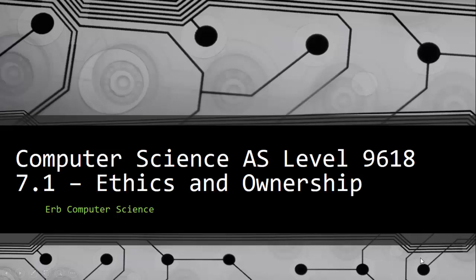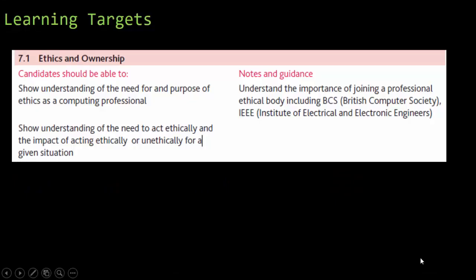Continuing with AS Level Computer Science 9618, getting into topic 7.1, Ethics and Ownership. Let's take a look at the learning targets. Candidates should be able to show an understanding of the need for and purpose of ethics as a computing professional, the importance of joining a professional ethical body including the BCS and the IEEE. By applying that, you'll be easily able to get your points on your Cambridge 9618 AS Level exam.